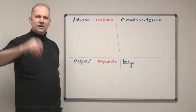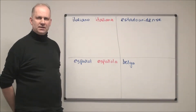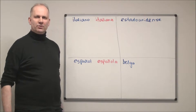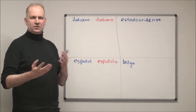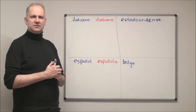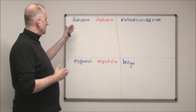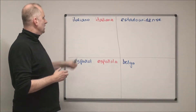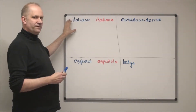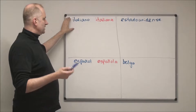Hola! In this tutorial we're going to look at describing somebody's nationality. We've already looked at talking about countries, and this time we're going to be looking at nationality adjectives. I've broken them down into four groups.